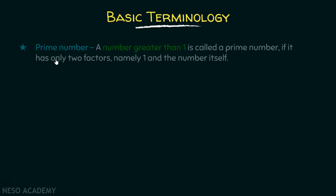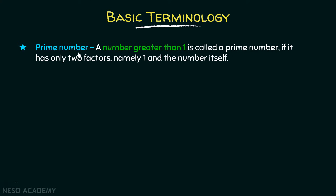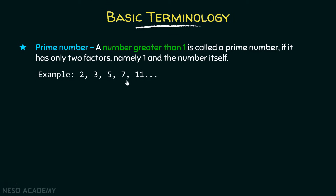The first term that we need to understand is prime number. What is a prime number? A number greater than one is called a prime number if it has only two factors, namely one and the number itself. For example, 2, 3, 5, 7, 11 — these are the numbers which have only two factors: one and itself.